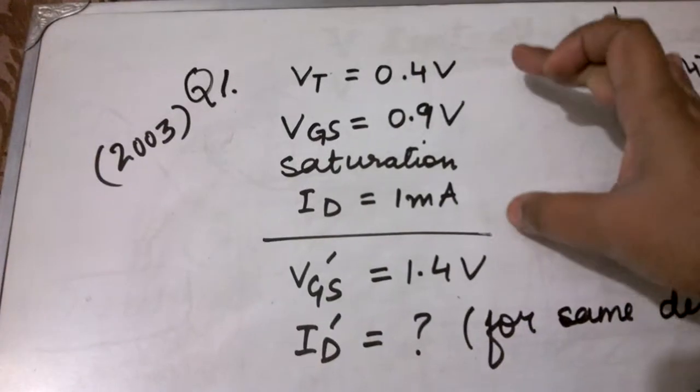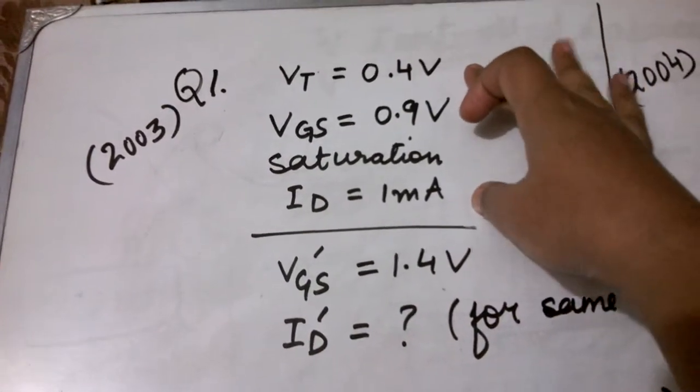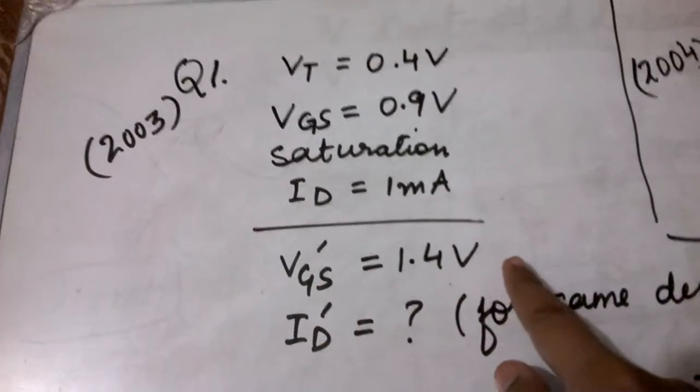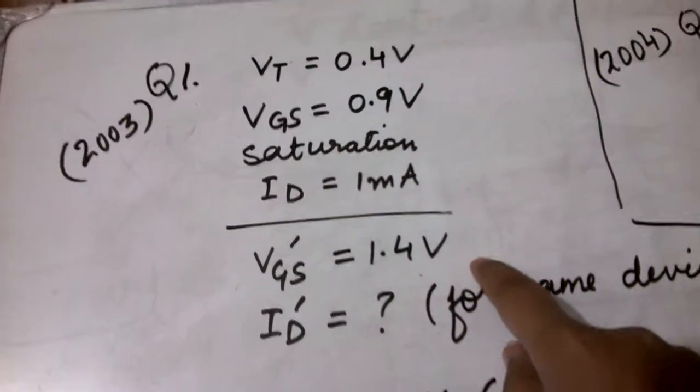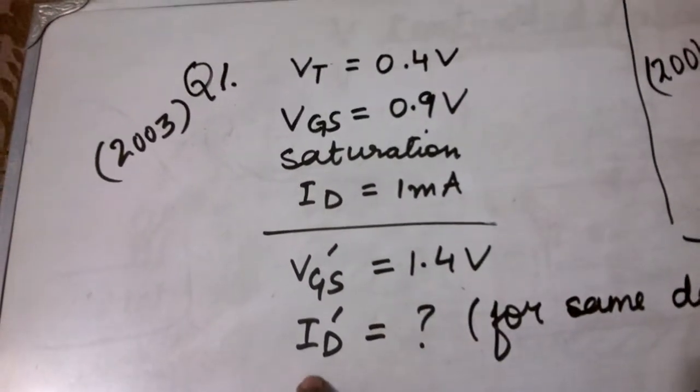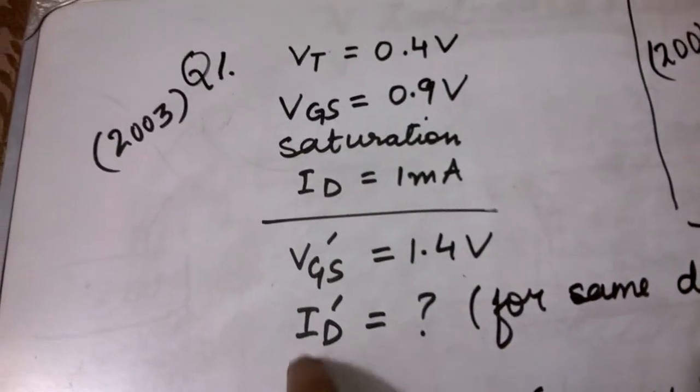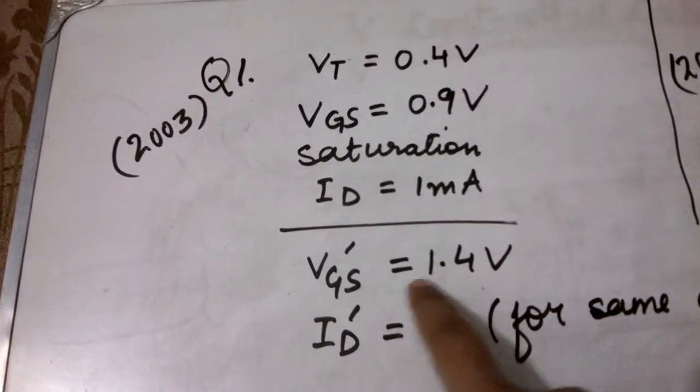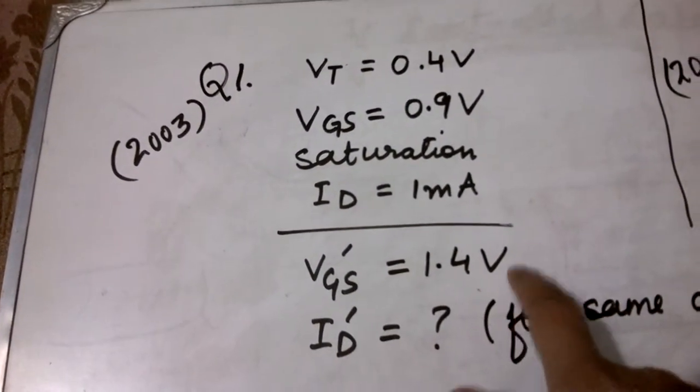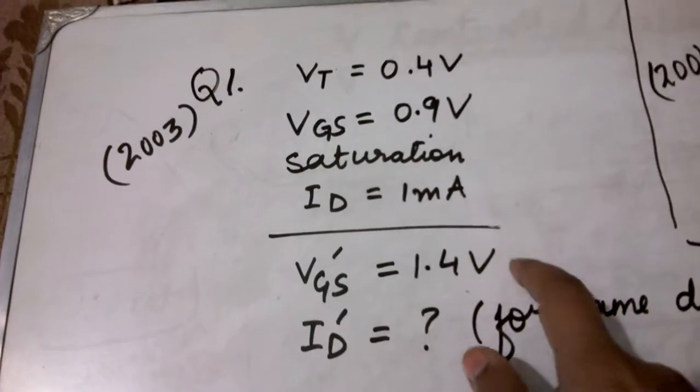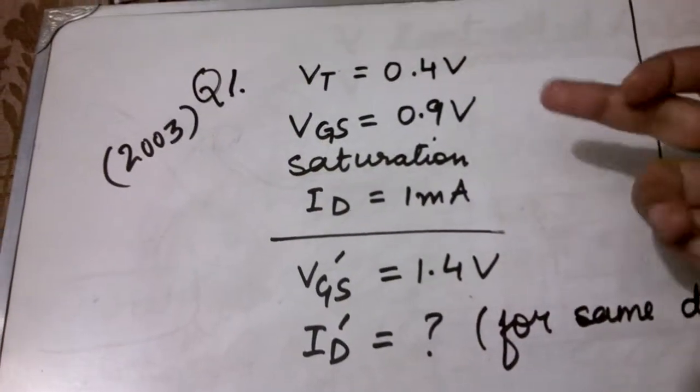It was given that the same device is now subject to a different gate to source voltage, that is 1.4 volts. For this particular Vgs we have to find out the drain current. It is also given that after Vgs becomes 1.4 volts, the device is still in saturation only. So we will have two cases, both for the same device, and in both cases the device is in saturation.